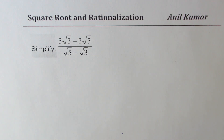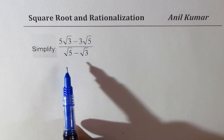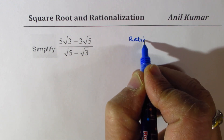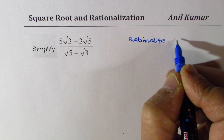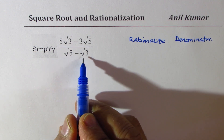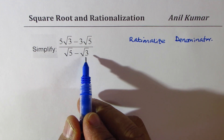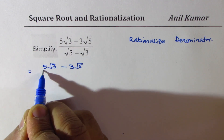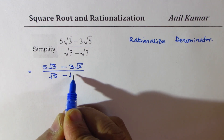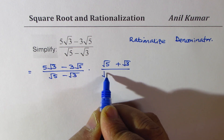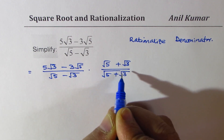Let's take the last example: simplify (5√3 − 3√5) divided by (√5 − √3). Again, rationalize the denominator by multiplying and dividing by the conjugate of the denominator, which is √5 + √3. So we multiply top and bottom by (√5 + √3).